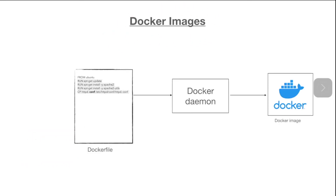A Docker image is a template for creating a Docker container. We can build our own image as well as use images built by someone else. In order to build our own image, we need a Dockerfile. A Dockerfile can be seen as a set of instructions which are passed to the Docker Daemon. The Docker Daemon will take those instructions, follow those steps, and will create a Docker image from it.